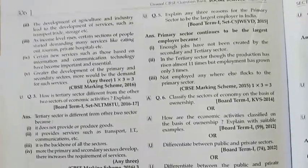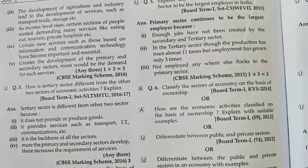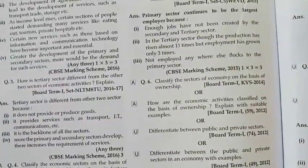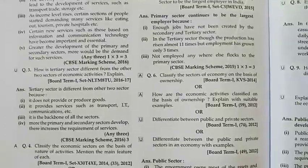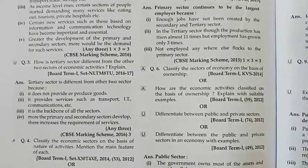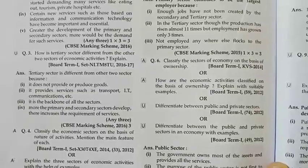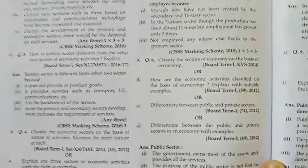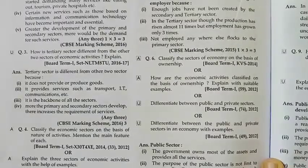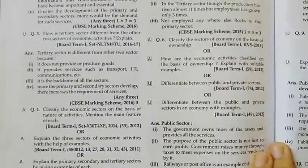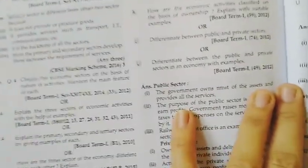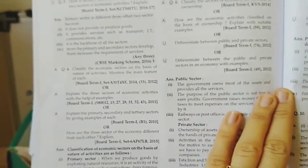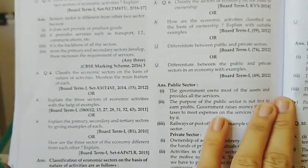Third point: as people's income rises, they will start demanding more and more facilities. And fourth, IT — information and communication technology — will cause the tertiary sector to grow. The next question is: how is the tertiary sector different from the other two sectors? You can note down points showing that it provides services in the form of transport, banking, etc., and that as primary and secondary sectors develop, the requirement for these services will also increase.